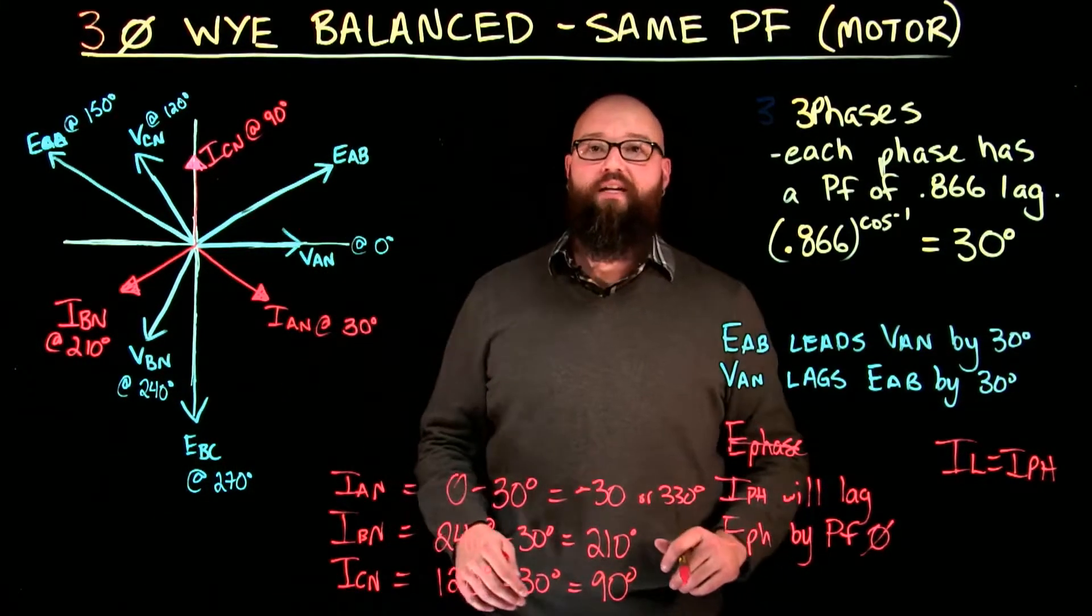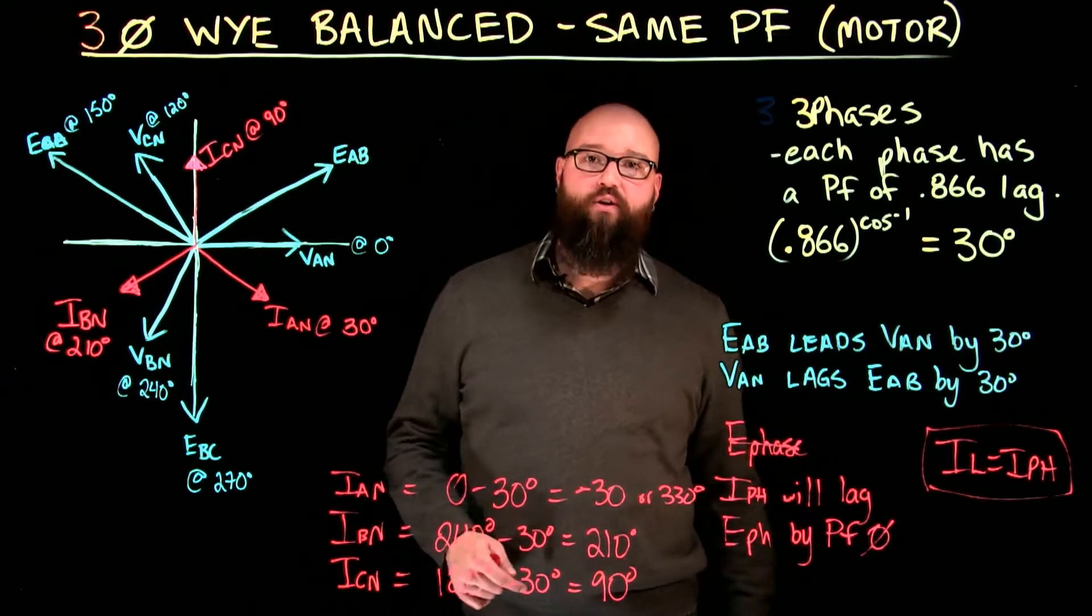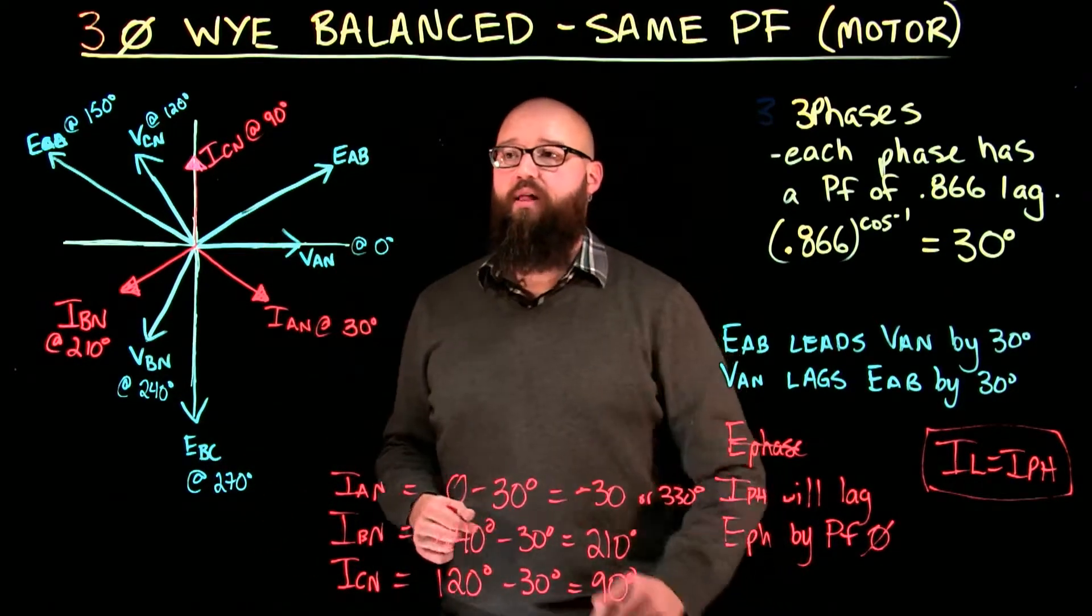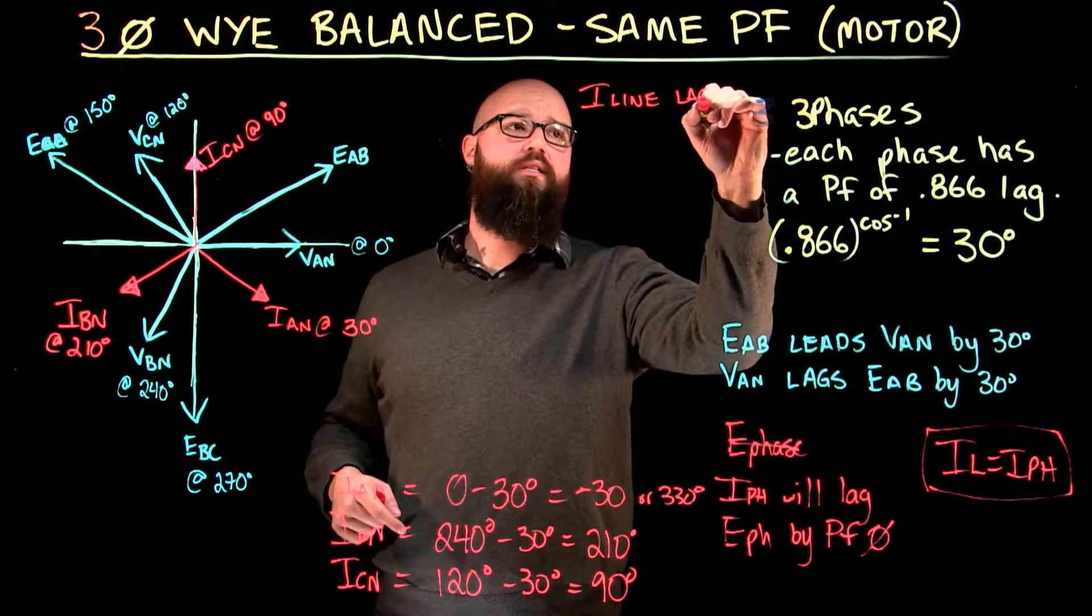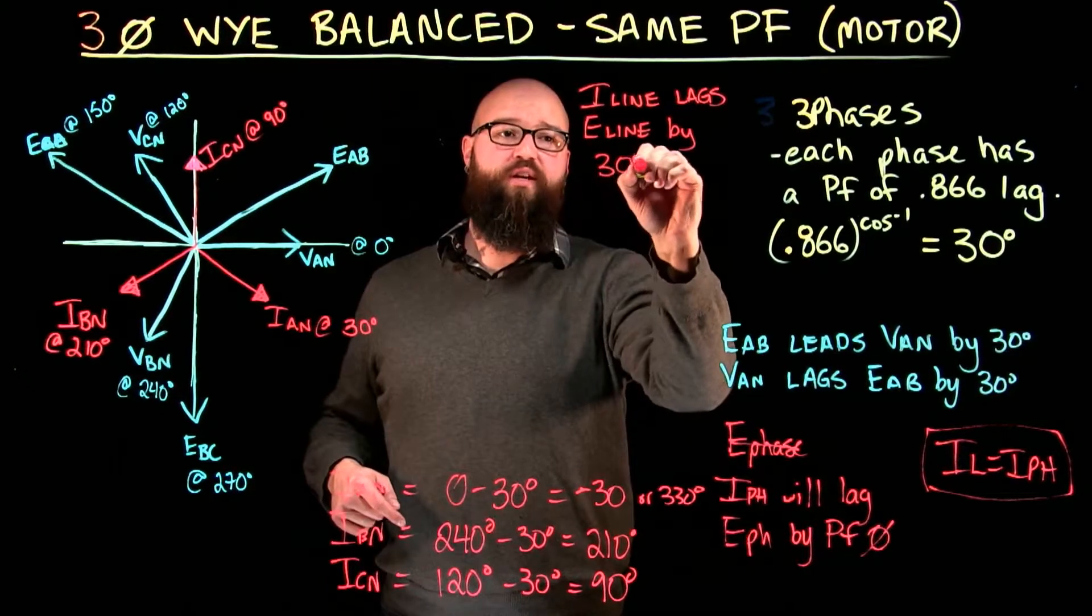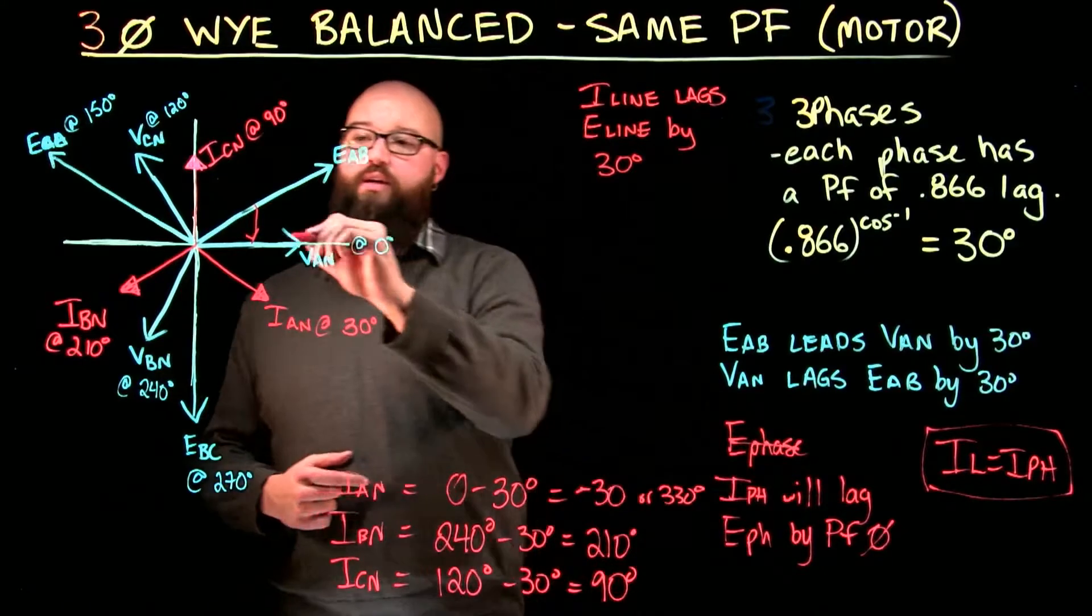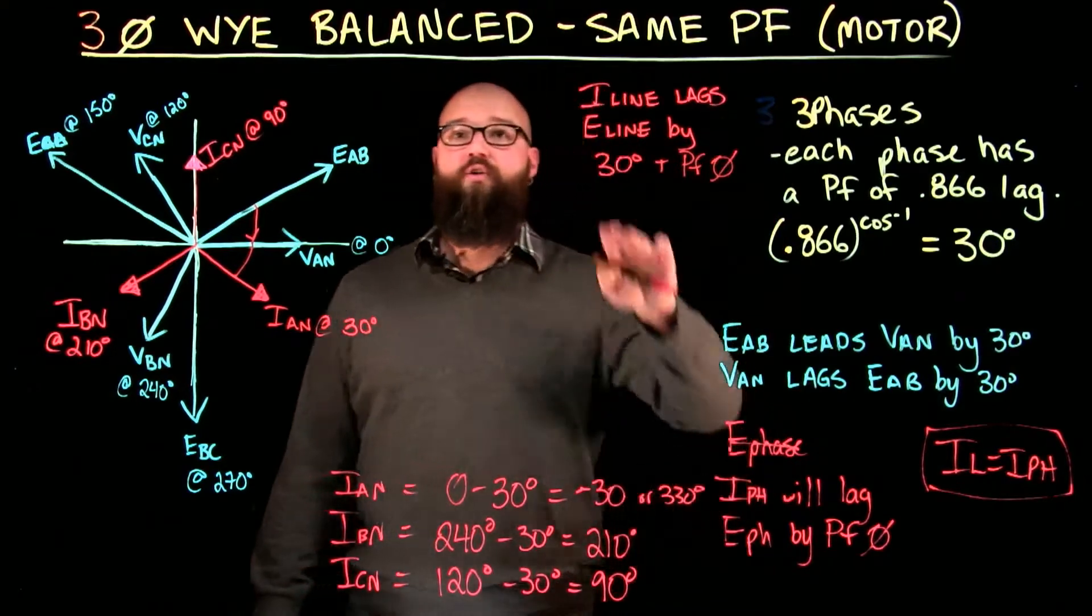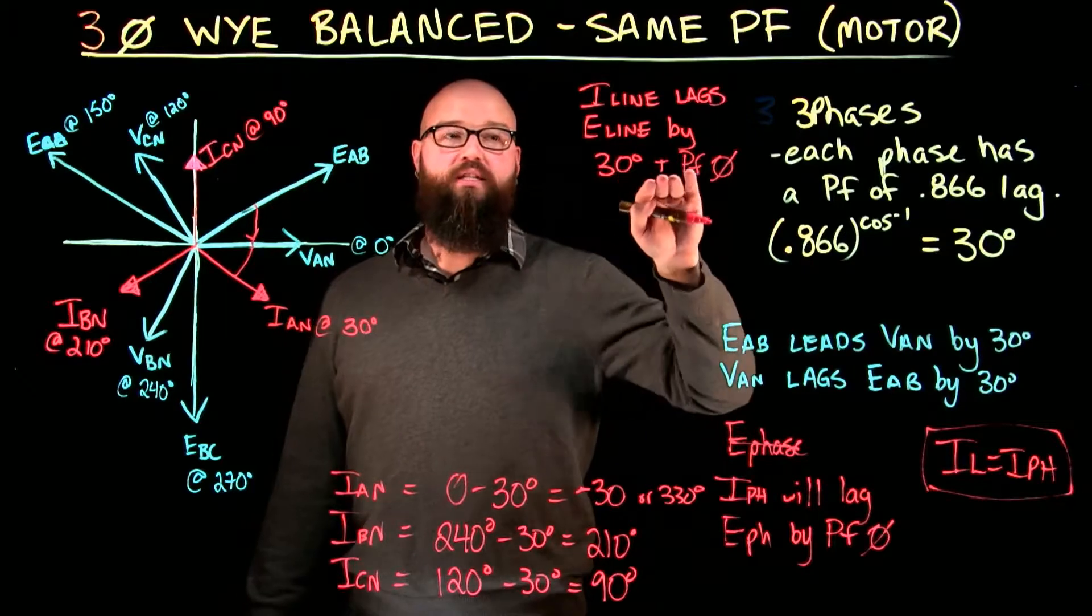That's where all three of our line, or sorry, our phase currents are, which, if we look at this statement right here, I can also say that's where my line currents are as well. Now, thinking about that, I can look at this now and say, well, I know that i line lags e line by 30 degrees will get us to our phase voltage plus our power factor angle. So, the i line will lag e line by 30 degrees plus the power factor angle.